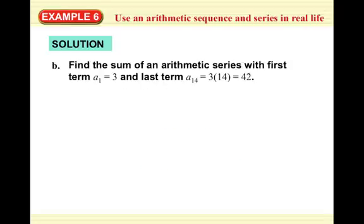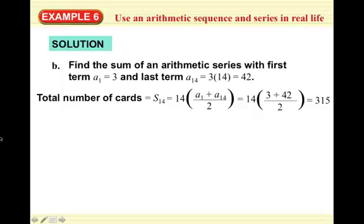For part B, we want the sum of the arithmetic series with first term A1 equals 3 and last term A14 equals 14 times 3, which is 42. The total number of cards in 14 rows is: n equals 14 times (3 plus 42) over 2, so 14 times 45 over 2, which equals 315. So to build a house of cards with 14 rows, you need a whole lot of cards.